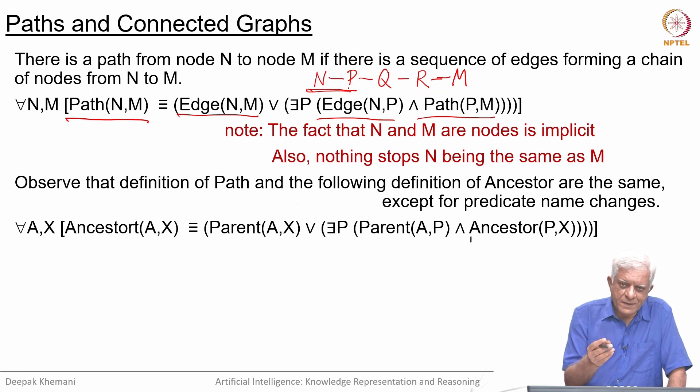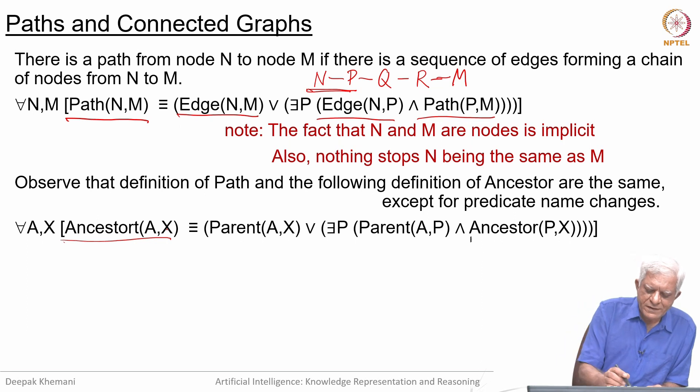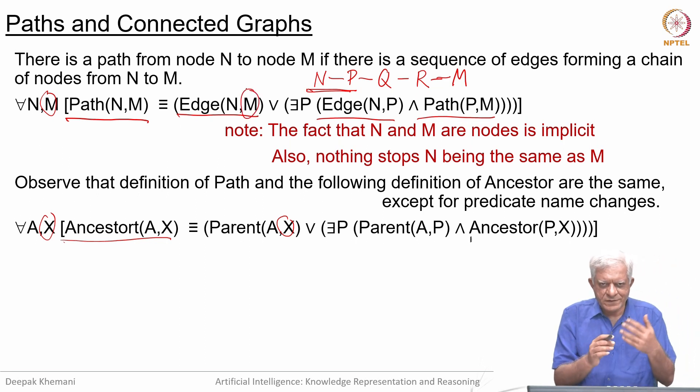We can interpret the meaning of path to be anything. I could say path means ancestor and ancestor means path. It really depends upon what you want to define. In both cases we are talking about some two things being connected. We have already drawn the ancestor thing almost as a graph. There is an immediate connection, an edge. Parent is an edge. Our graph is made up of only parent edges.